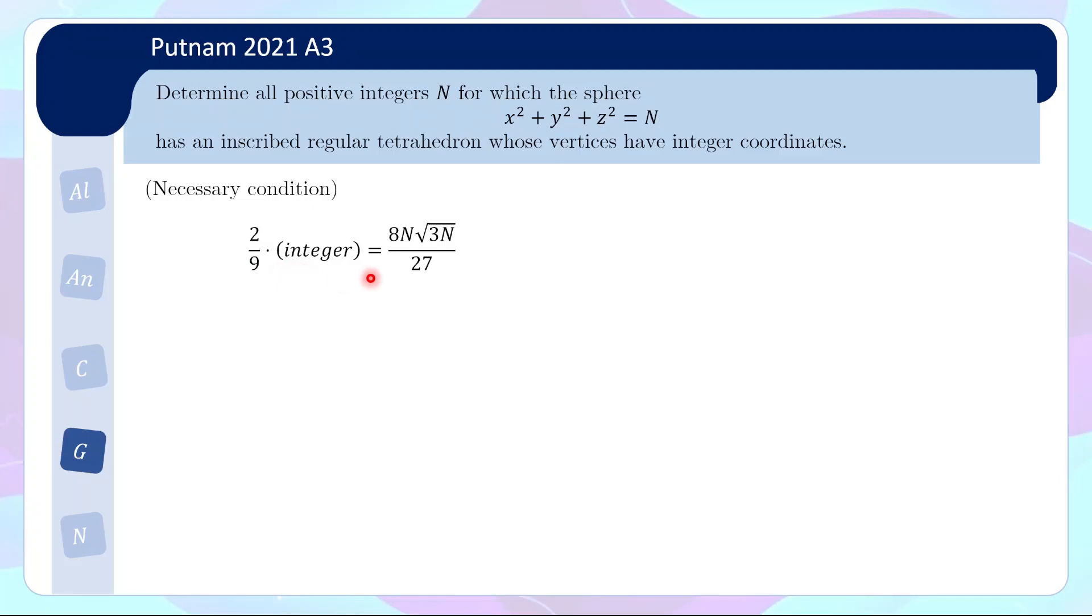What do we get? We get that 2/9 of integer is 8√3/27 times n times √n, right? So now we have a condition that is on n. And if we put 27/8n to the other side, what we have is √3n is a rational number. So this is a very strong condition. And in fact, we know that n is a positive integer, right? So square root of a positive integer is either irrational or it is an integer itself. So √(3n) is in fact an integer, which implies that n must be of the form 3 times a perfect square. So this is a very strong condition. And let us now see whether this is sufficient in the sense that if we are given n of this form, can I always construct a solution?